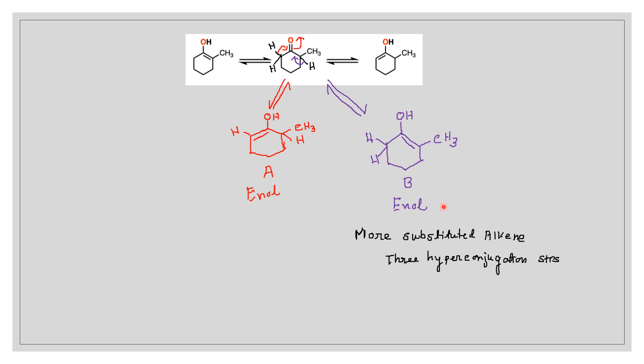Compound B is a more substituted alkene. This alpha carbon has 3 alpha hydrogens, that means 3 hyperconjugation structures are possible.